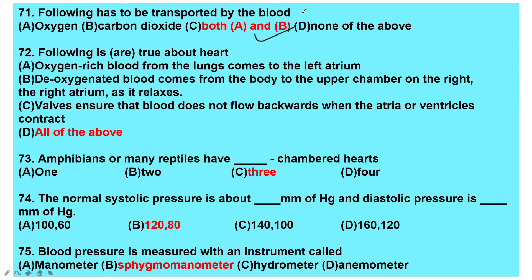Following is true about the heart: oxygen-rich blood from the lungs comes to the left atrium; deoxygenated blood comes from the body into the right atrium; valves ensure that blood does not flow backwards when the atria or ventricles contract — all of the above is the right answer.